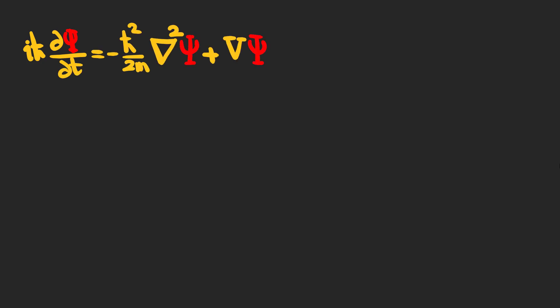This is the Schrödinger equation in three dimensions. This red symbol here is the wave function which contains all the information you need to describe the behavior of the particle you are using this equation for.